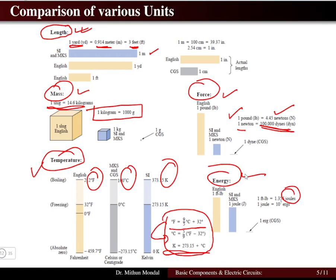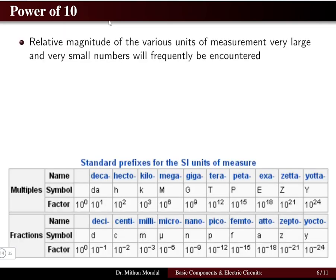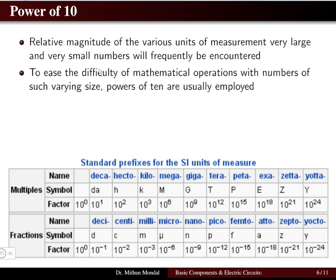In electrical sciences, we require the power of 10 notation because the relative magnitudes of various units can be very large or very small, and these are frequently encountered. In such cases, mathematical operations with numbers of varying size become difficult, so powers of 10 are usually employed to ease that difficulty.